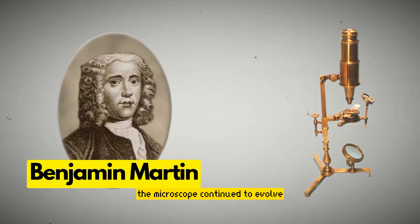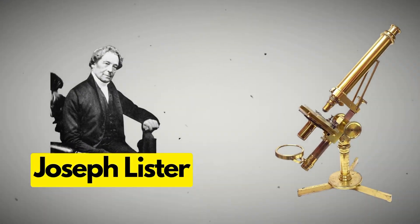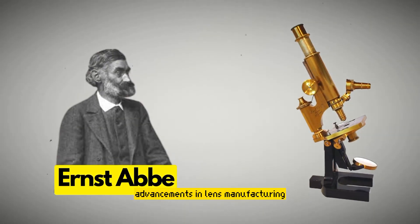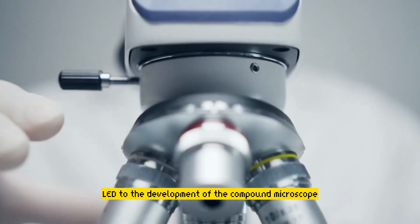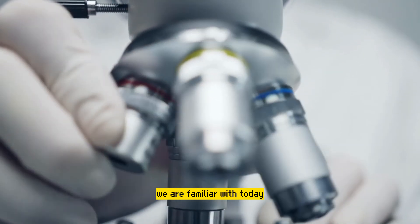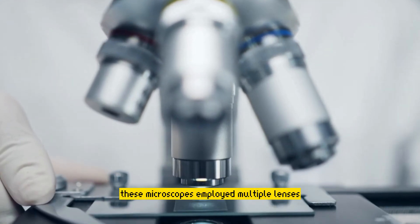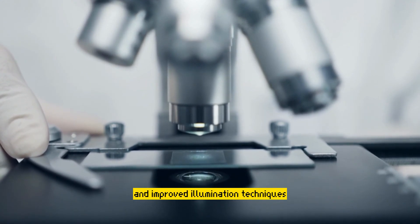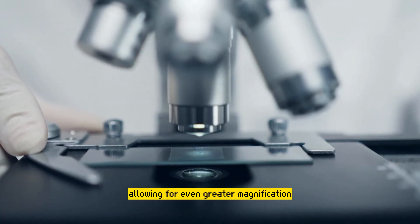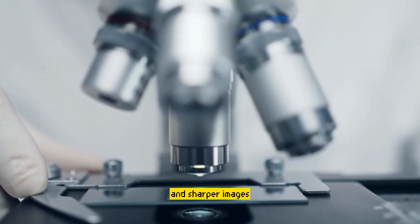The microscope continued to evolve throughout the centuries. In the 19th century, advancements in lens manufacturing and optical technology led to the development of the compound microscope we are familiar with today. These microscopes employed multiple lenses and improved illumination techniques, allowing for even greater magnification and sharper images.